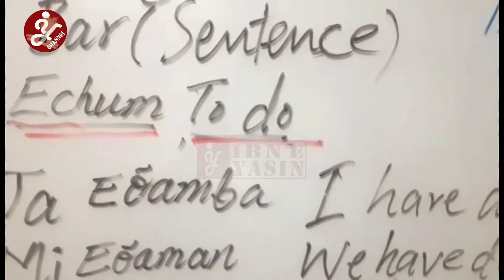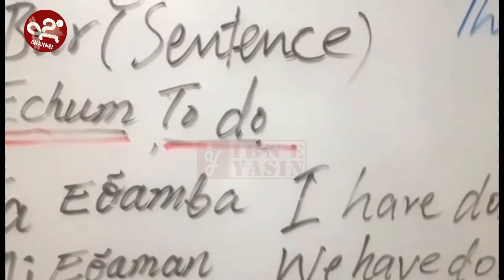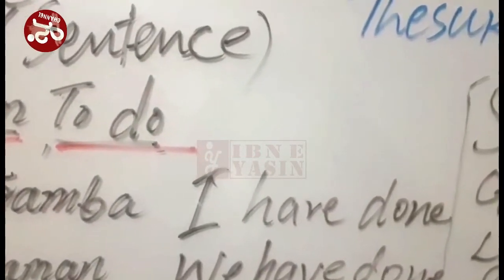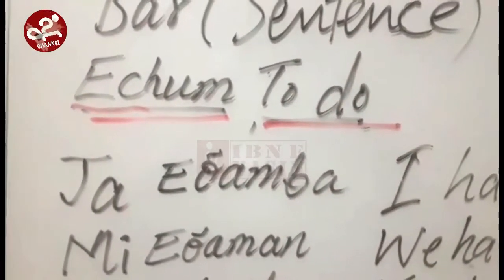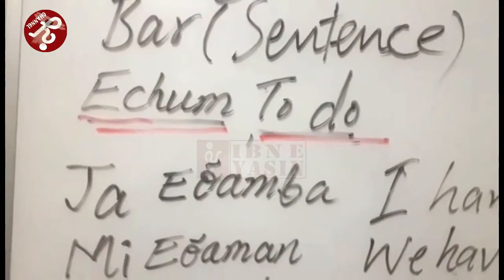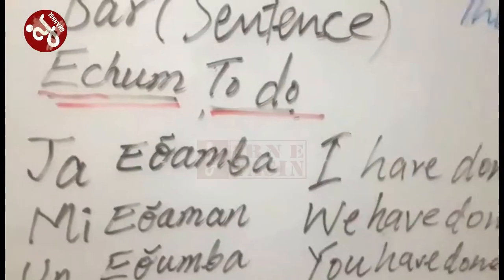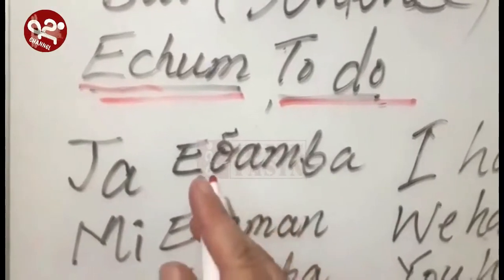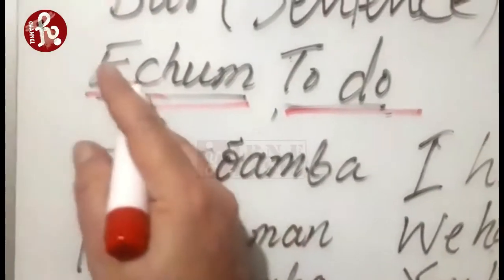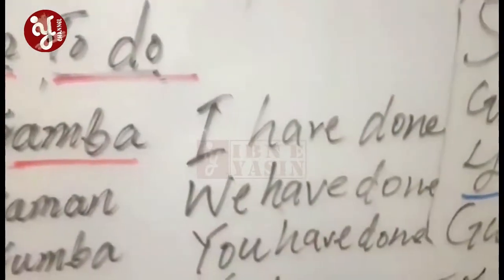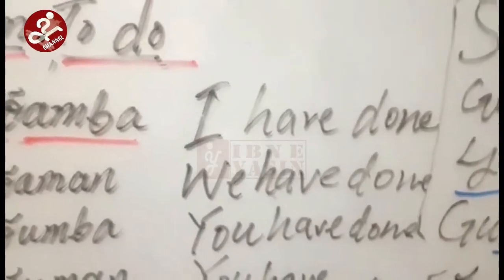'Have' is used mostly for plurals or more than one person, and 'has' for a single person — except for 'I' and 'you,' where you use 'have' in English. In Burushaski there are different techniques to make the tense. I am going to explain: 'etamba' comes from 'echum.' So 'etamba' means 'I have done' — any work I have done.